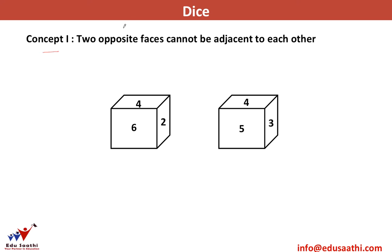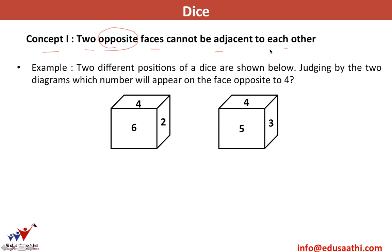Concept one: two opposite faces cannot be adjacent to each other. Let's understand this with an example. Two different positions of a dice are shown below. Judging by the diagrams, which number will appear on the face opposite to four? Going by this logic, I see that six is adjacent to four and face two is also adjacent to four. So obviously, six and two cannot be opposite to four.